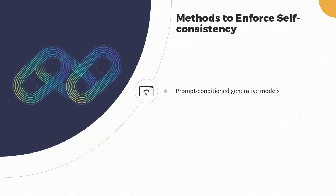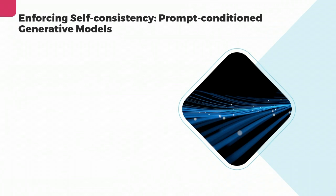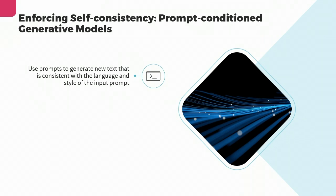Another way to enforce self-consistency is by using reinforcement learning. In this approach, a reward function is used to evaluate the generated text based on how well it matches the input prompt. The reward function is used to train the model, which will then generate text that is more consistent with the input prompt. Prompt-conditioned generative models can generate text that is more coherent and plausible than traditional generative models.